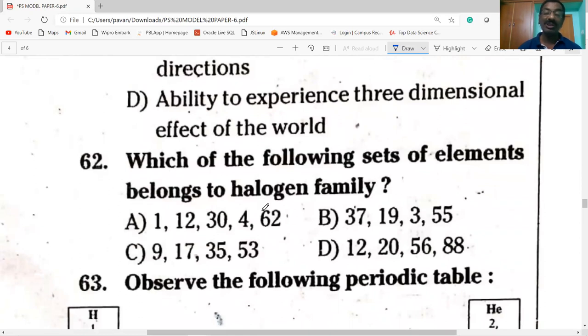Which of the following set of elements belongs to the halogen family? The halogen family is the 17th group. They are fluorine, chlorine, bromine, iodine, astatine, etc. You know that atomic number of fluorine is nine, chlorine is 17. So option C is correct. These are the halogen family elements.